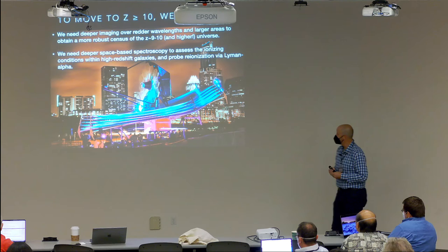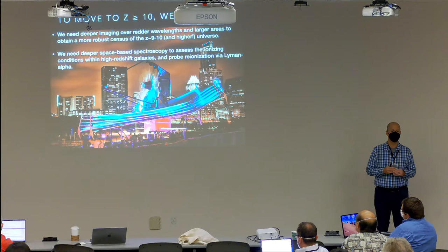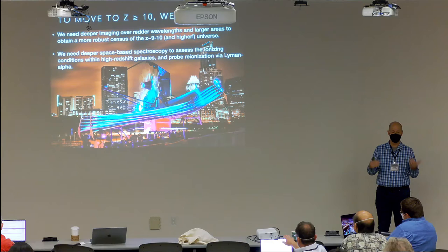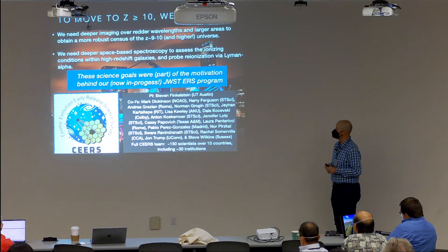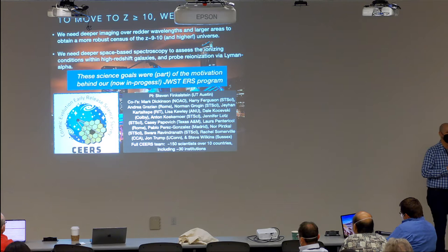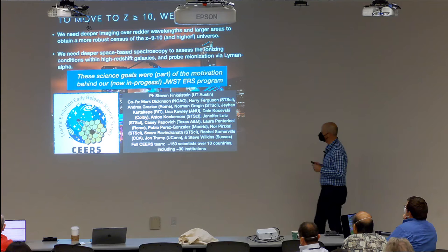Not only can we find these galaxies, we can confirm their redshifts and study their properties with spectra. Many of these science goals motivated our Early Release Science program CEERS, which has many collaborators in this room. CEERS was approved in August 2017 and we got our first data in July 2022 — a long wait, but well worth it. Science goal number one is nailing the redshift-10 universe by studying luminosity function evolution.